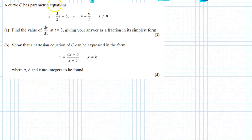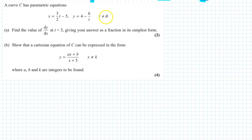A curve C has a parametric equation x = 3/(2t - 5) and y = 4 - 6/t, where t is a non-zero number.